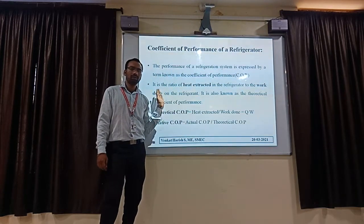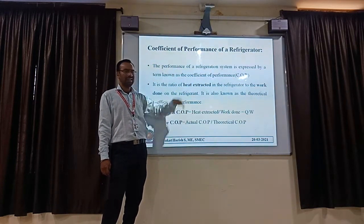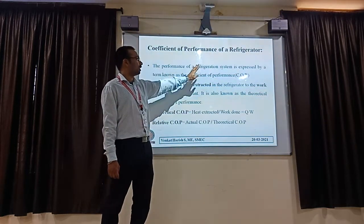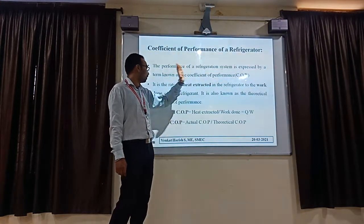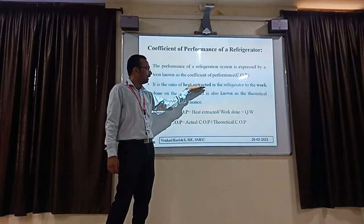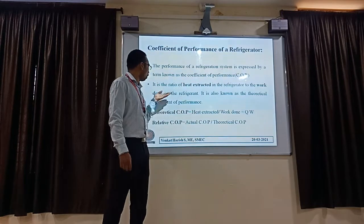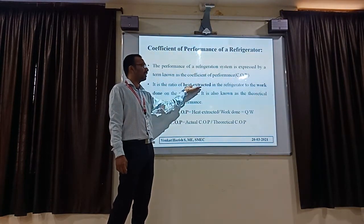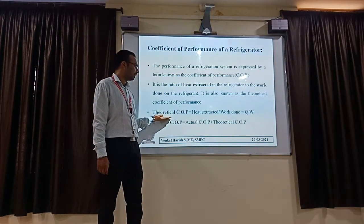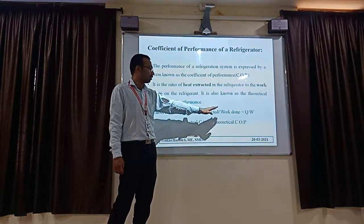Next, coefficient of performance. The coefficient of performance is nothing but the input and output results. Whatever the possible good results we are getting from the refrigeration or any component — that is its performance measurement. The performance of a refrigeration system is expressed by the term coefficient of performance. It is the ratio of heat extracted. In the refrigeration, it will absorb the heat from the object or substance and deliver it to the outside. That is heat extracted in the refrigerator to the work done on the refrigerant. Theoretically, it is nothing but the ratio — coefficient of performance is heat extracted divided by work done, that is Q divided by W.